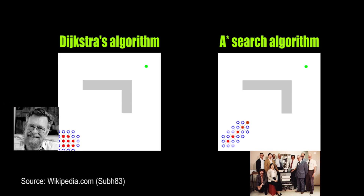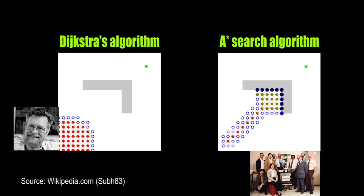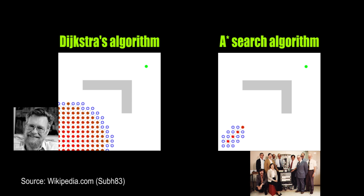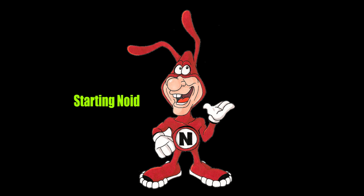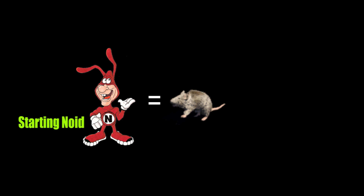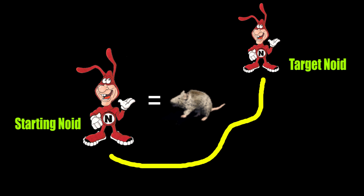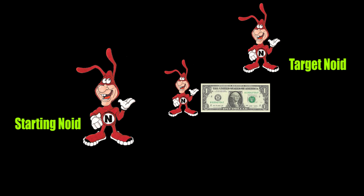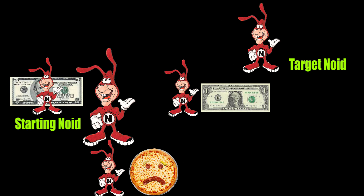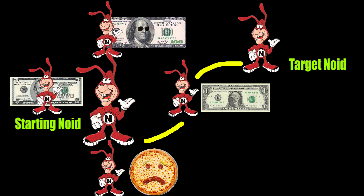A-Star is a search algorithm that's sort of a modified version of Dijkstra's algorithm that uses a heuristic to help guide the search. Basically, how it's implemented is that you start on one node — let's say the enemy position — and you look for the shortest path to a given target, let's say the player position. To do this as quickly and efficiently as possible, you look at the relative cost of each adjacent node and determine which is likely to get you closer to your goal.